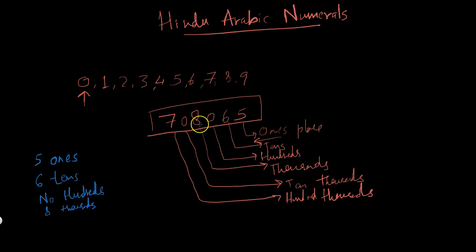We have eight thousands on the thousands place. We have no ten thousands because we have a zero at the ten thousands place. Then we have seven hundred thousands.